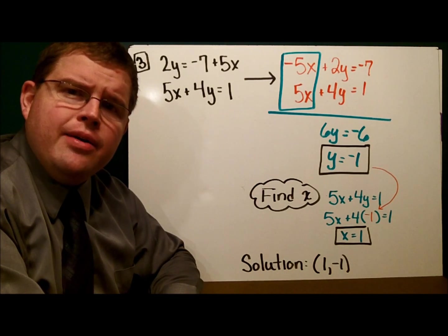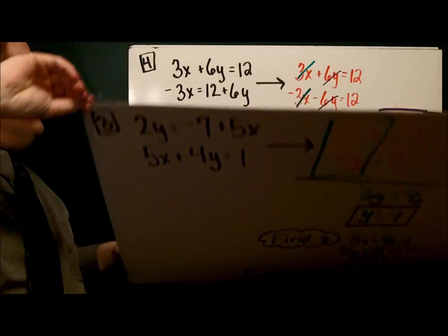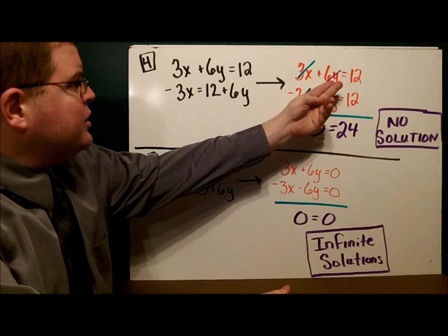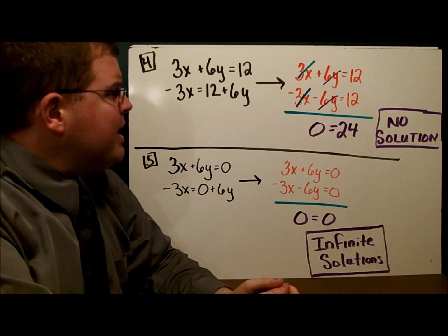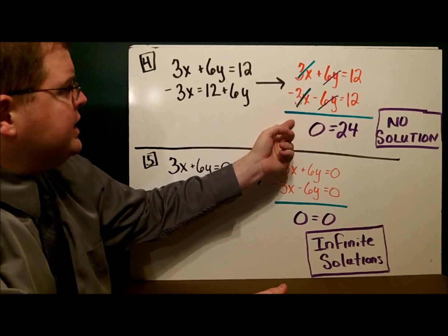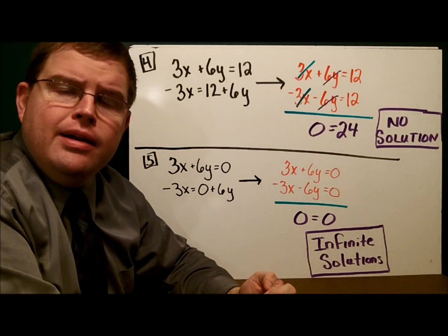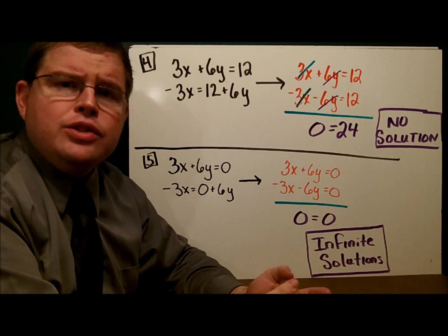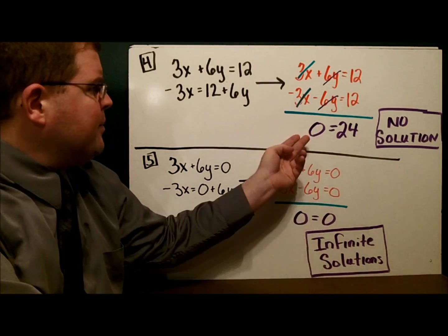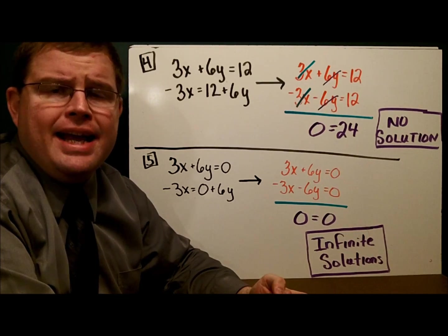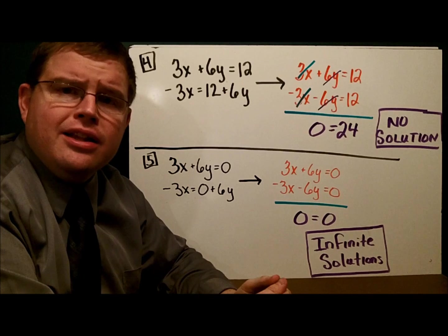Example 4 is very similar. Once again, we have to rewrite our equation into standard form. 3x plus 6y equals 12, and negative 3x minus 6y equals 12. In this case, both of our variables cancel out. 0x, 0y equals 24. Remember, when both of our variables cancel out, we have a special case, either parallel lines or the lines are the same. If we get something that makes no sense, in this case 0 equals 24, then we know it's the parallel line case. If it makes no sense, there is no solution. The lines never intersect.